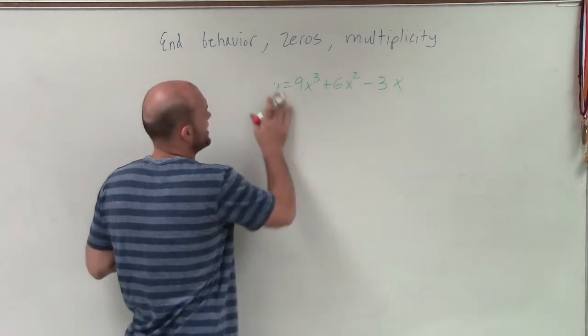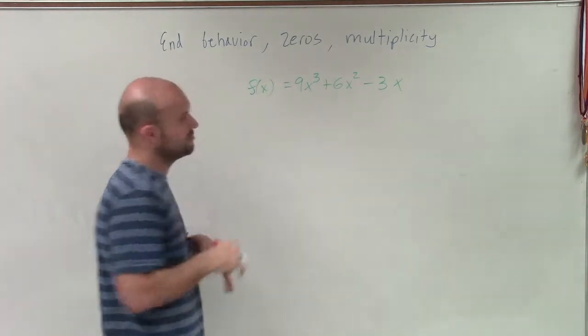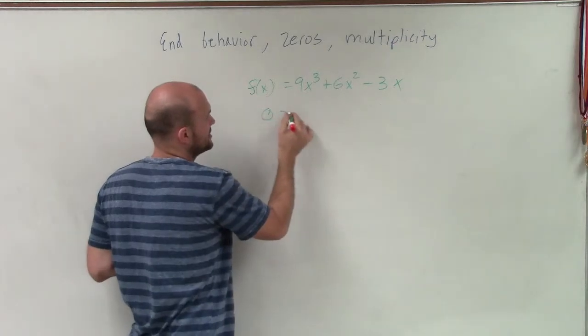When determining the zeros, I'm not writing any polynomial equation. I'm writing a polynomial function. So now, when determining the zeros, we're going to set our f of x equal to 0.